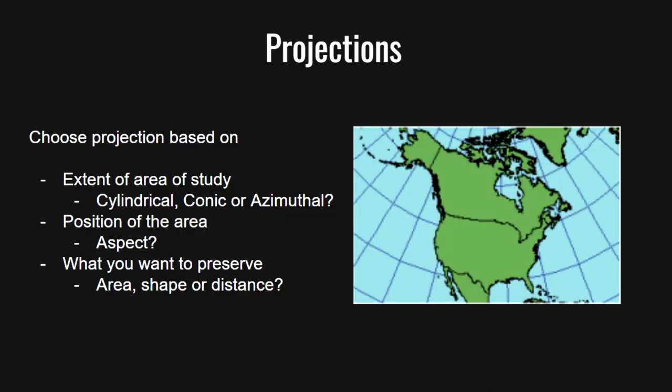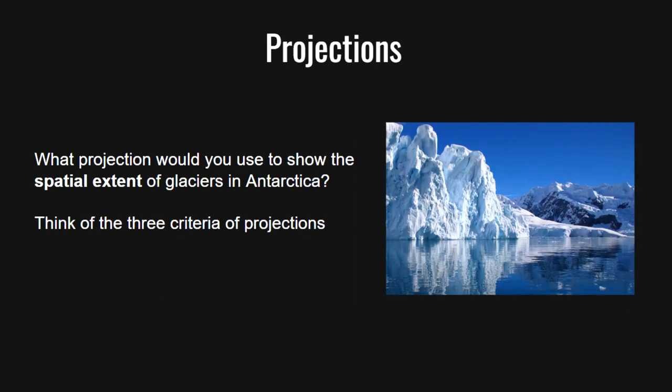Therefore, we should choose a projection based on the extent of our area of study, the position of the area of study, what we want to conserve, and what we're okay with distorting. We will quickly run through an exercise to determine what projection we should choose. Imagine a scenario where we want to show the spatial extent of glaciers in Antarctica — think of the three criteria of projections and bring them together to choose a projection.